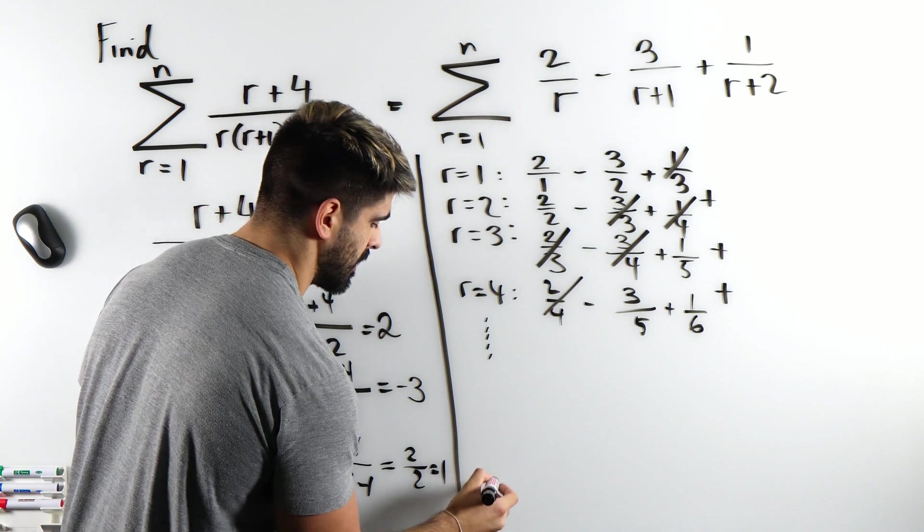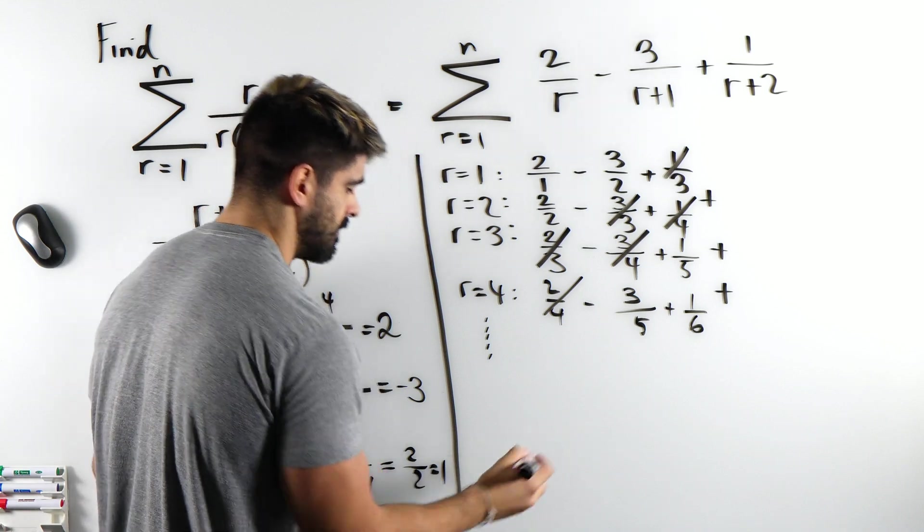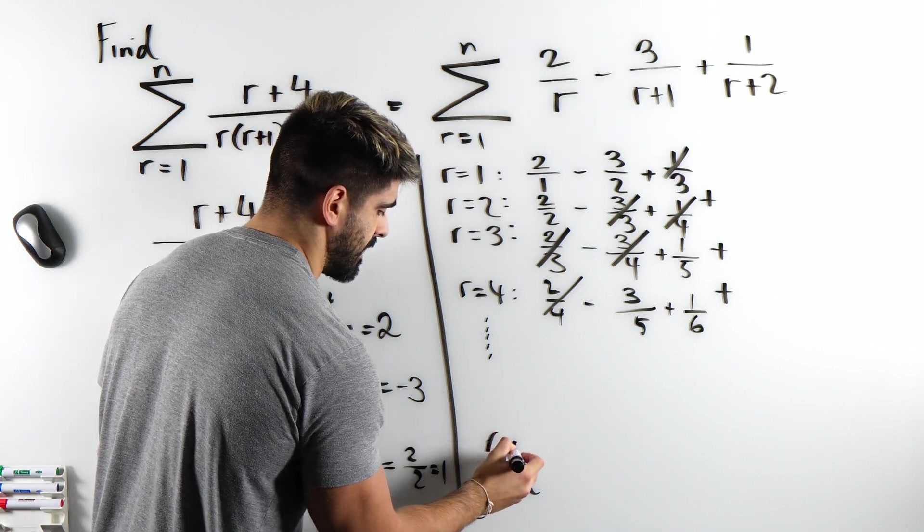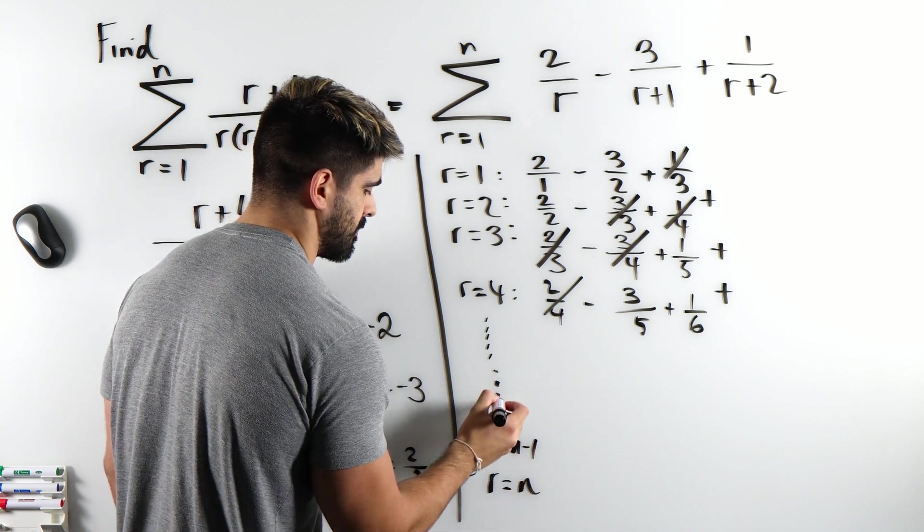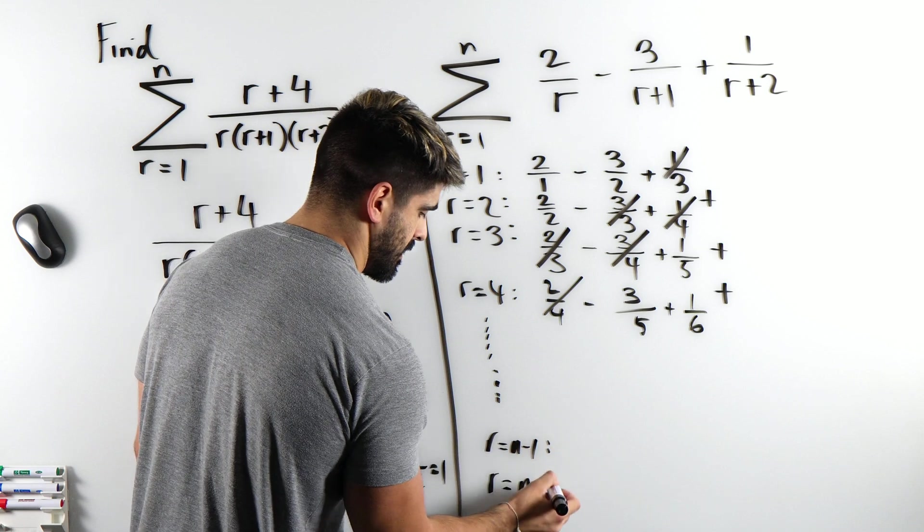Remember the last line is going to be n. So we're going to have r equals n and the line above that, n minus 1. So we're going up to all of these terms.